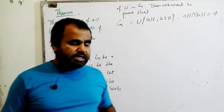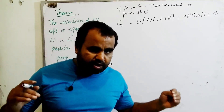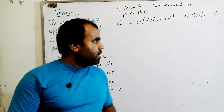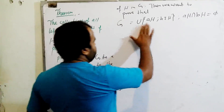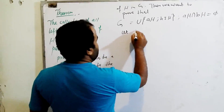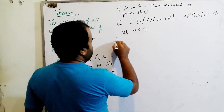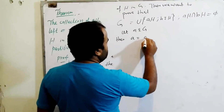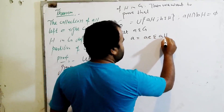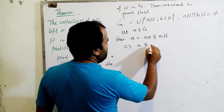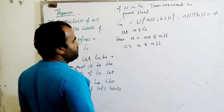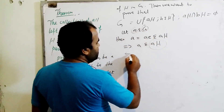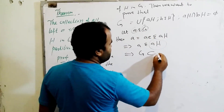The definition of partition is that their union should equal G and the intersection should be empty. For Part 1: let A be an element of G. Then we can write A equals A times e, which belongs to AH. So A is an element of AH, meaning every element of G is also contained in AH.